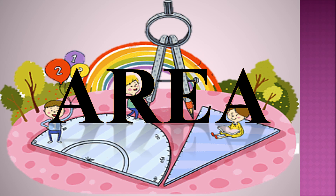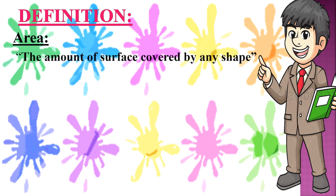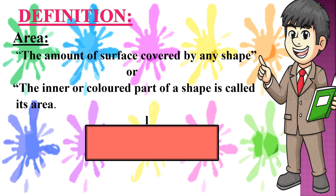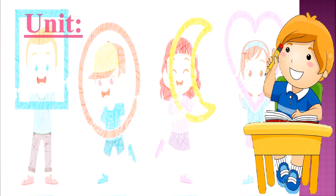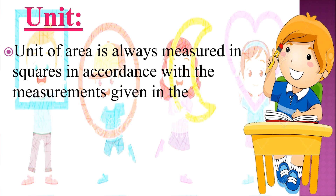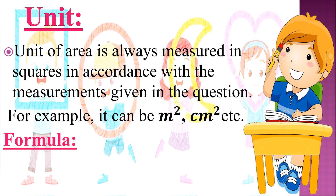Now I will tell you about area. What is area? The amount of surface covered by any shape, or the inner or colored part of a shape, is called its area. We use length and breadth to measure shapes. The unit of area is always measured in squares in accordance with the measurements given in the question — for example, meter square, centimeter square, etc. To find the area of a rectangle, we use the formula: area of rectangle equals length multiplied by breadth square units.